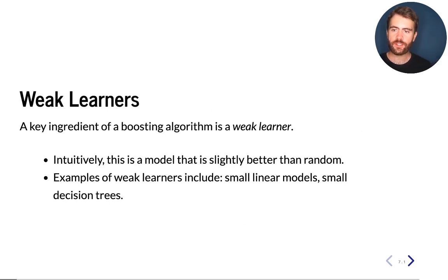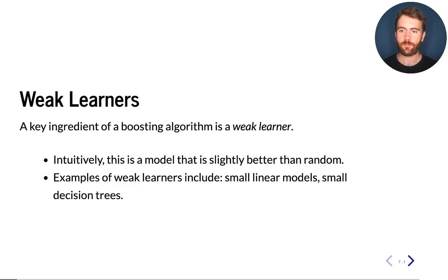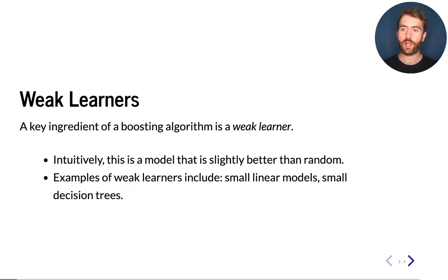A key ingredient for defining a boosting algorithm is the model G, which is called the weak learner. We call this the weak learner because the only requirement on these models is that they're slightly better than random. In practice, a weak learner can be either a linear model with a small number of features, or a small decision tree like a depth-1, depth-2, or depth-3 decision tree — any model that really underfits the data but is still able to extract some small amount of signal, making it more accurate than random.